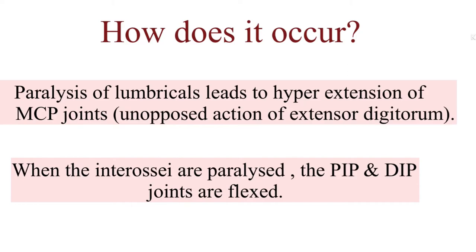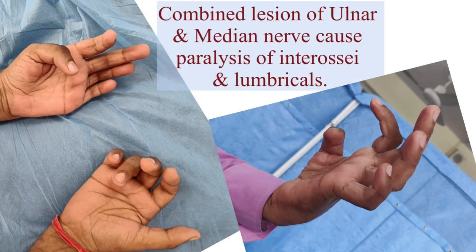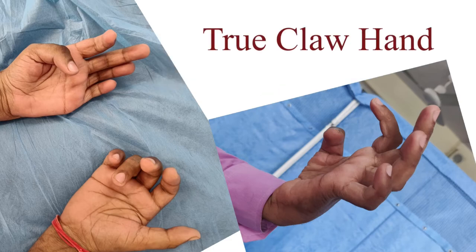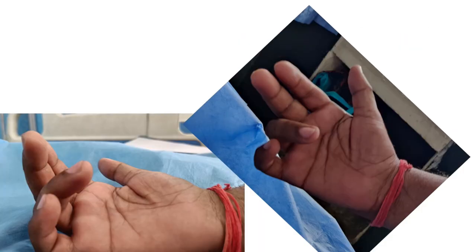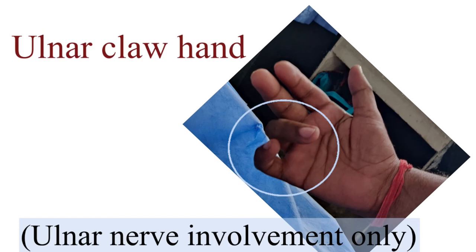The ulnar nerve supplies the medial two digits while the median nerve supplies the lateral three digits. So a combined lesion of the ulnar and median nerve causes complete claw hand, also known as true claw hand, while a lesion of only the ulnar nerve causes deformities in the medial two digits, leading to ulnar claw hand.